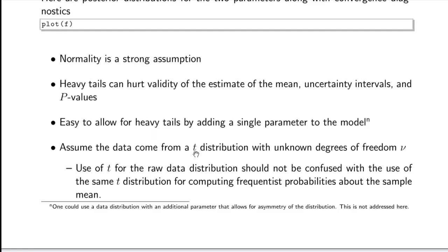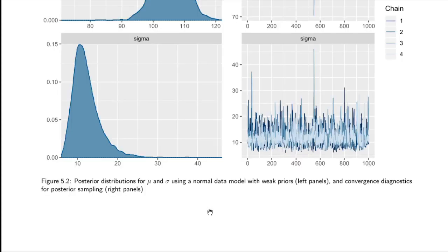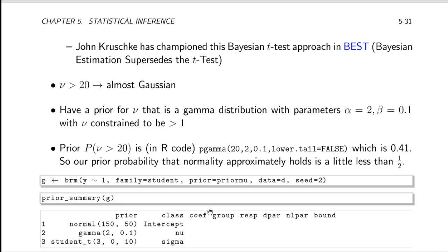We can handle heavy tails by relaxing the normality assumption, adding a single new parameter to the model — called nu. We assume the raw data come from a t-distribution with unknown degrees of freedom nu. John Kruschke has written much about this, with papers and an R package called BEST — Bayesian Estimation Supersedes the T-test — which points out that Bayesian t-tests have many advantages over classical t-tests. When the degrees of freedom for the raw data t-distribution exceed 20, the t-distribution is getting close enough to the normal distribution to be considered approximately normal.